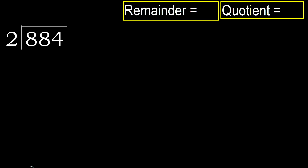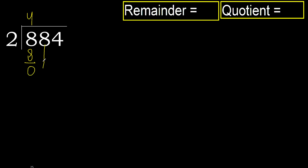884 divided by 2. 8 is not less, therefore start with 8. 2 multiplied by which number is nearest to 8 but not greater? 2 multiplied by 5 is 10, 10 is greater. 2 multiplied by 4 is 8, is not greater. Subtract: 8 minus 8 is 0. Next.